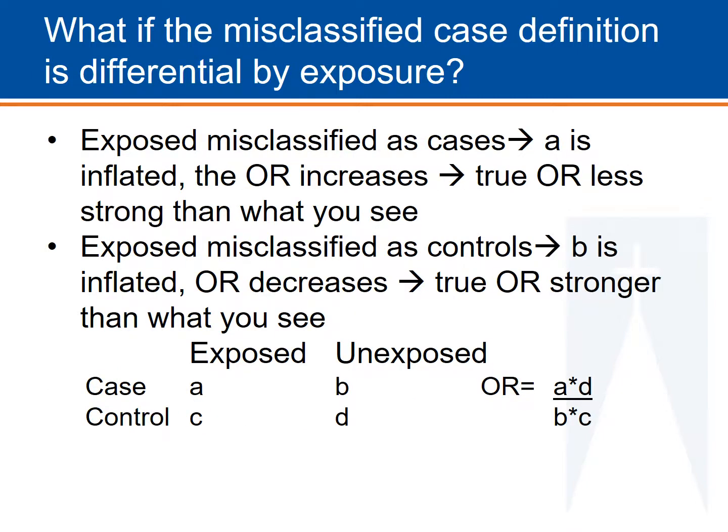Case definition misclassification can also be differential by exposure. In that case, it matters whether the exposed are more likely to be misclassified as cases, in which the odds ratio increases because the A group is artificially inflated. The odds ratio you see is inflated and the true odds ratio is actually less strong than what you see in your data. If the exposed are misclassified as controls, on the other hand, the B group is inflated and the odds ratio goes down. In that case, the true odds ratio is stronger than what you see.